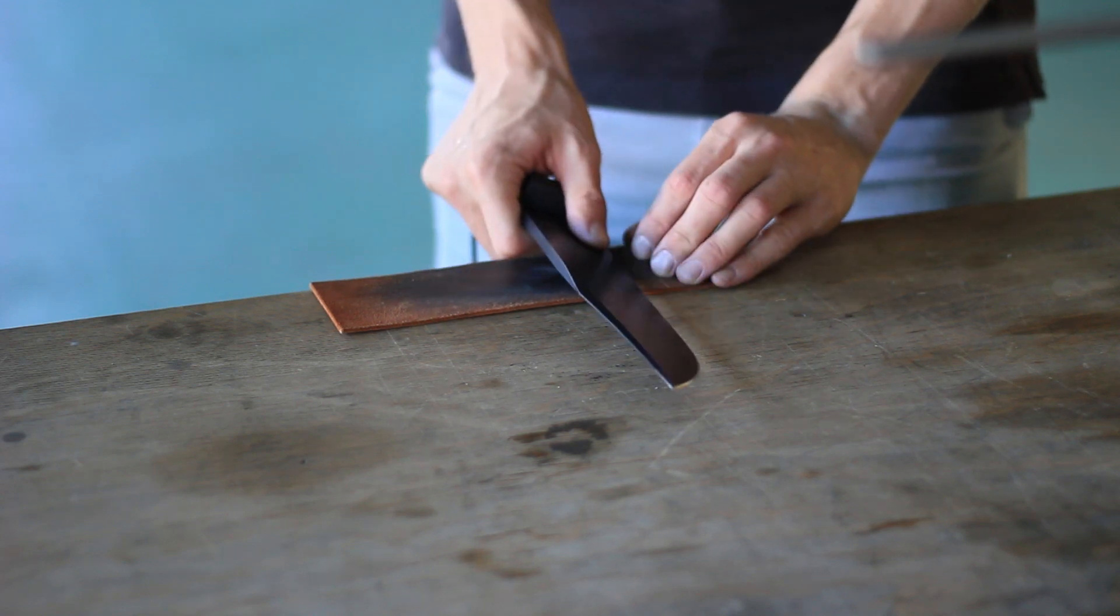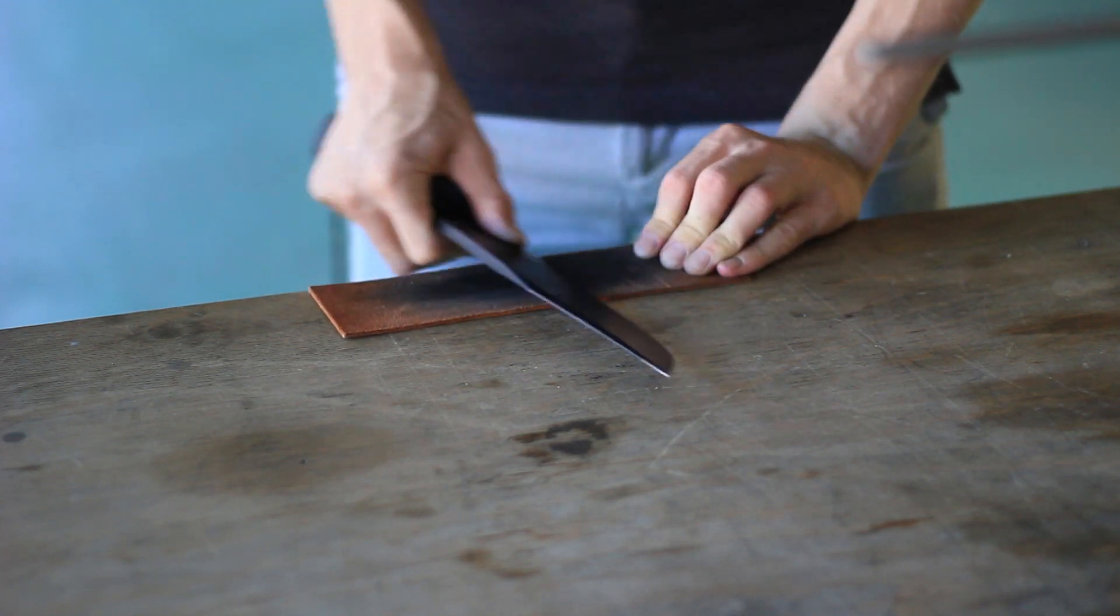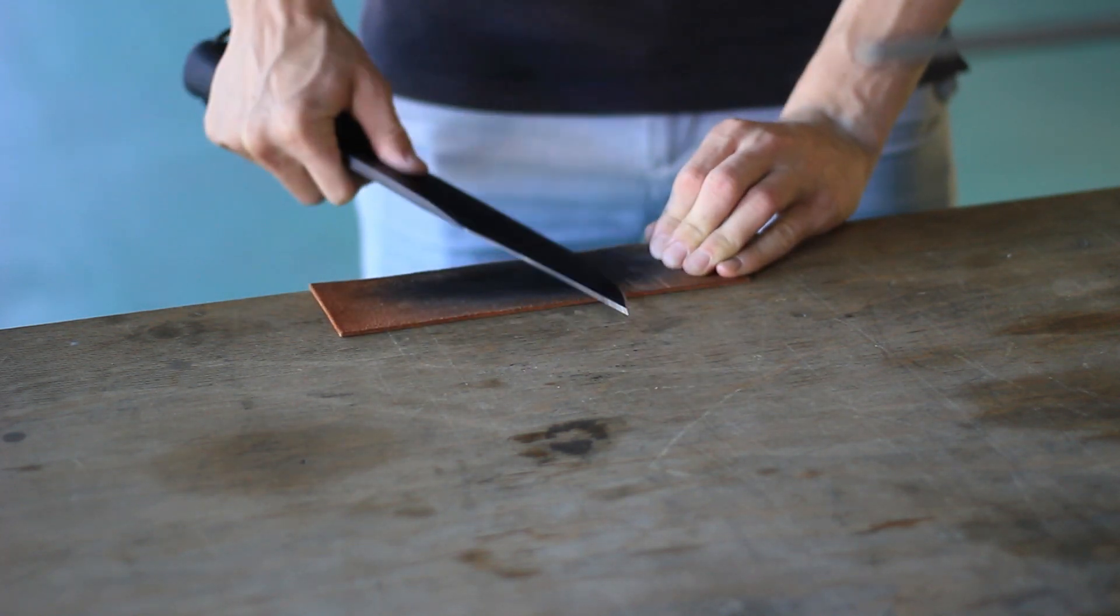After sharpening, I'm always using a leather strop to polish the edge even more. That way you get rid of all the microburrs that form while sharpening. And it also shines up the edge even more.